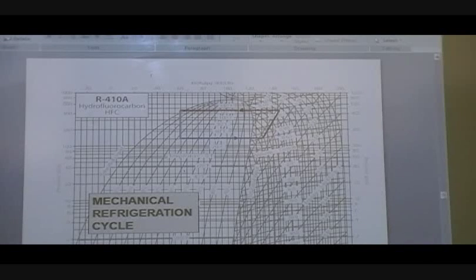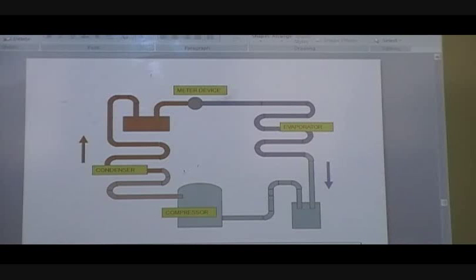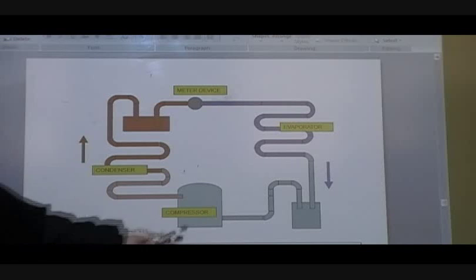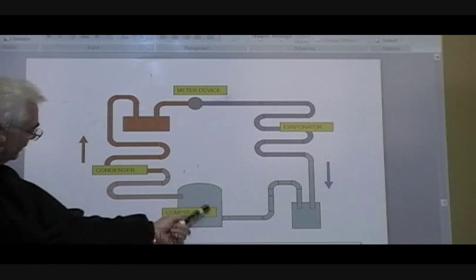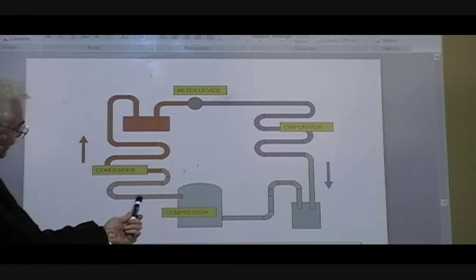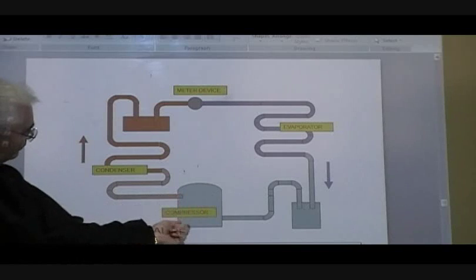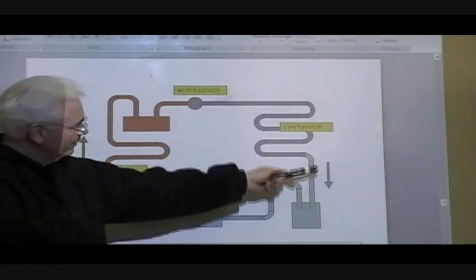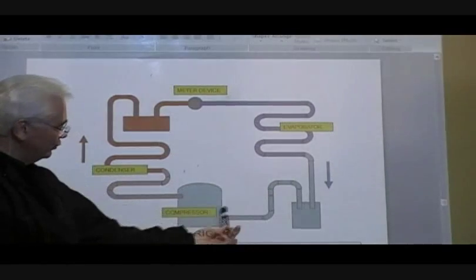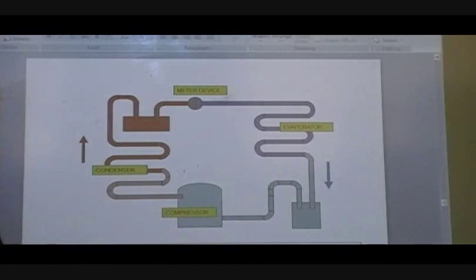All right, we'll move on to the next chart. The thing about the pressure-enthalpy diagram, it's a graphical representation of what's happening in that refrigeration system. You've got your compressor, you've got your vapor coming in, and it pumps the vapor up to a high pressure, you've got your vapor leaving, and remember, the compressor is a vapor pump. If for some reason you have a malfunction and you get liquid back to that compressor, that's bad news.